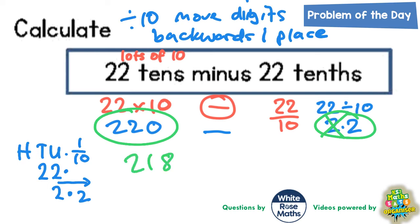And then we need to take away the 0.2 from 218. Well, if we take away 0.2, that's going to send us down to 217.8